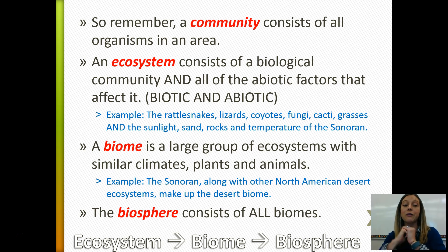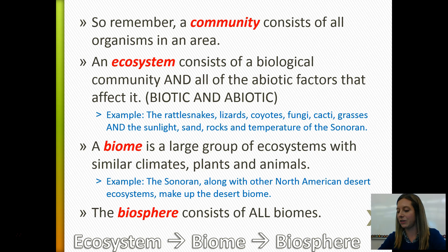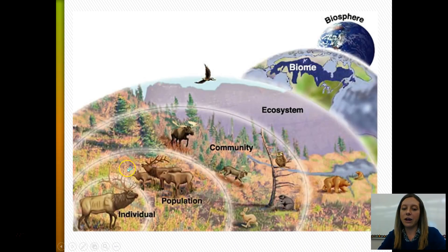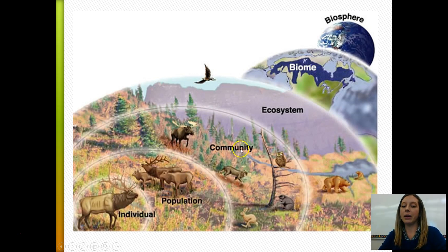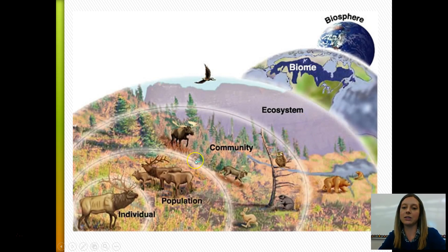Those similar ecosystems come together to form a larger biome. In this case, our biome would be the desert biome — similar climates, plants and animals. The Sonoran, along with other North American desert ecosystems, makes up the desert biome, and all biomes together make up the biosphere. Another graphic shows the individual organism as a caribou, the population as caribous, the biological community as caribou, moose, mountain lions, rabbits, trees, grasses, bacteria and fungi, and the ecosystem adding non-living rivers, streams, rocks, and mountains — forming a coniferous forest biome in northern Canada.